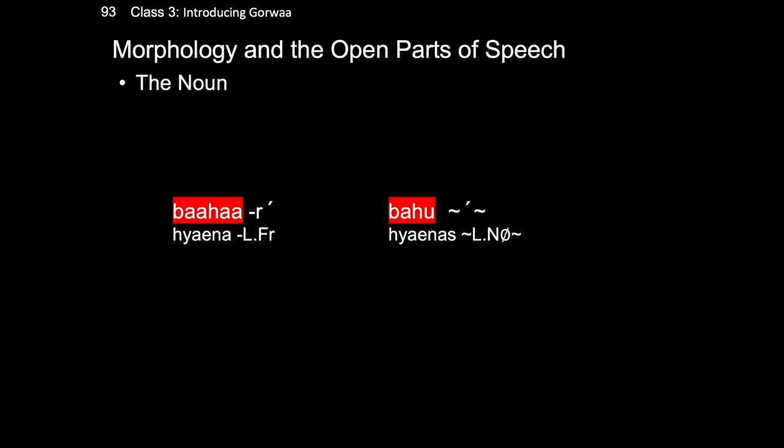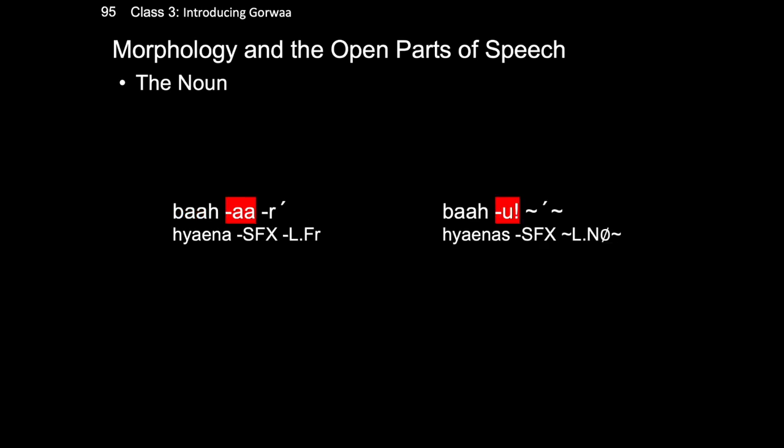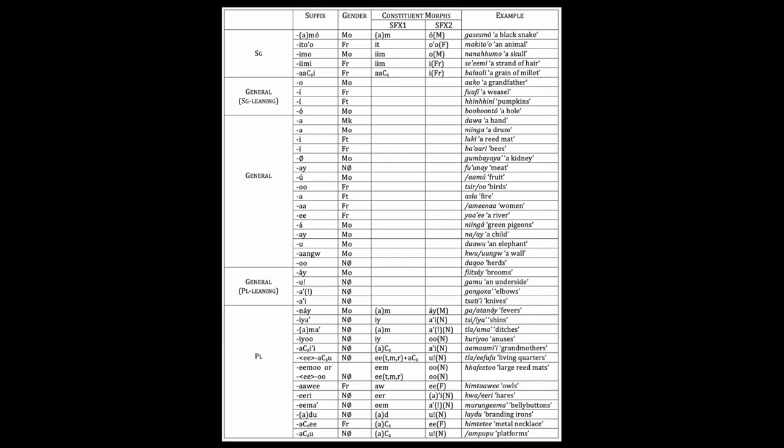The stem is rather more complex — not only is it where lexical information about the noun lies, but also information about its gender and number value. Take the noun baha, hyena. The singular noun is baha and the plural form is bahu. These two forms show that the stem is actually formed of at least two different morphemes: the morpheme a, marking singular, and the morpheme u, along with an operation which shortens the stem vowel, marking plural. I've written extensively about these suffixes elsewhere and have identified more than 40 distinct nominal suffixes for Gorwa.